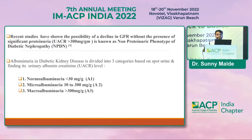Recent studies have shown the possibility of decline in GFR without the presence of significant proteinuria — a UACR ratio of more than 300 mg per gram — known as the non-proteinuric phenotype of diabetic nephropathy. Albuminuria in diabetic kidney disease is divided into three categories based on spot urine albumin creatinine levels: normal albuminuria less than 30 mg/g (A1), microalbuminuria 30 to 300 (A2), and macroalbuminuria more than 300 (A3).